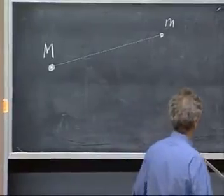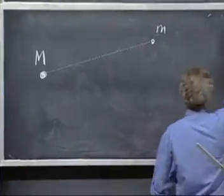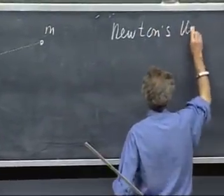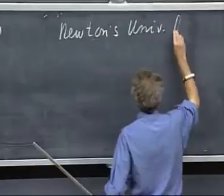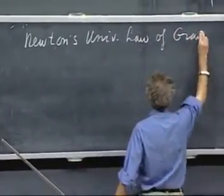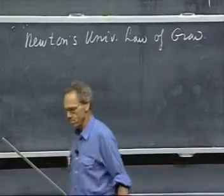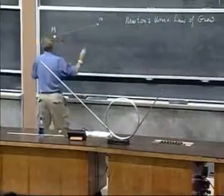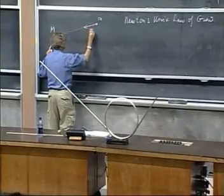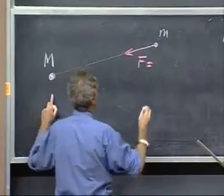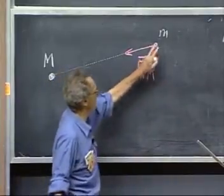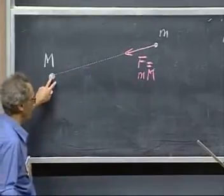And this now is Newton's universal law of gravity, which he postulated. He says the force that little m experiences equals little m times capital M times a constant, so it is little m experiences that force due to the presence of capital M.